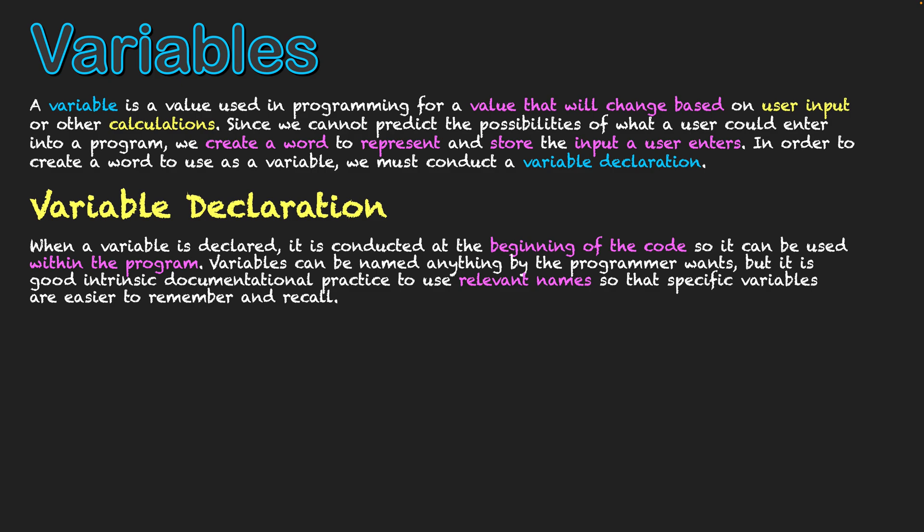Variables can be named anything by a programmer. There are some boundaries on certain symbols you could use, and you can't use words that are already reserved as functions. But there is a lot of discretion at the programmer's end on what they name a variable. It's good intrinsic documentation practice to use relevant names. For example, if storing a username, calling the variable 'name', 'username', or 'user_one_name' makes it easier to recall and makes logical sense within documentation, especially when working with a team.